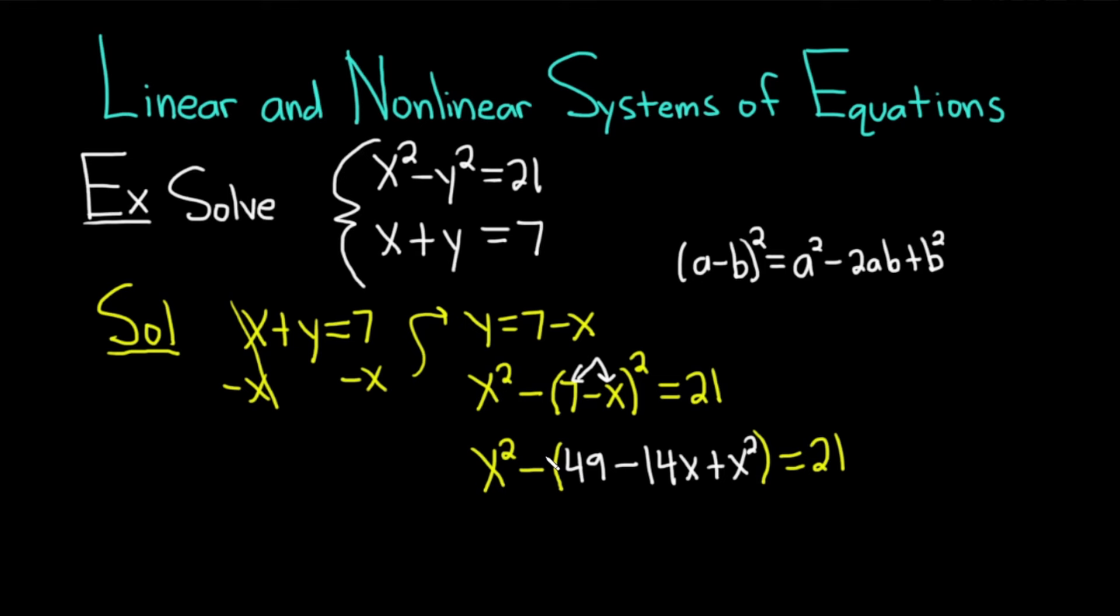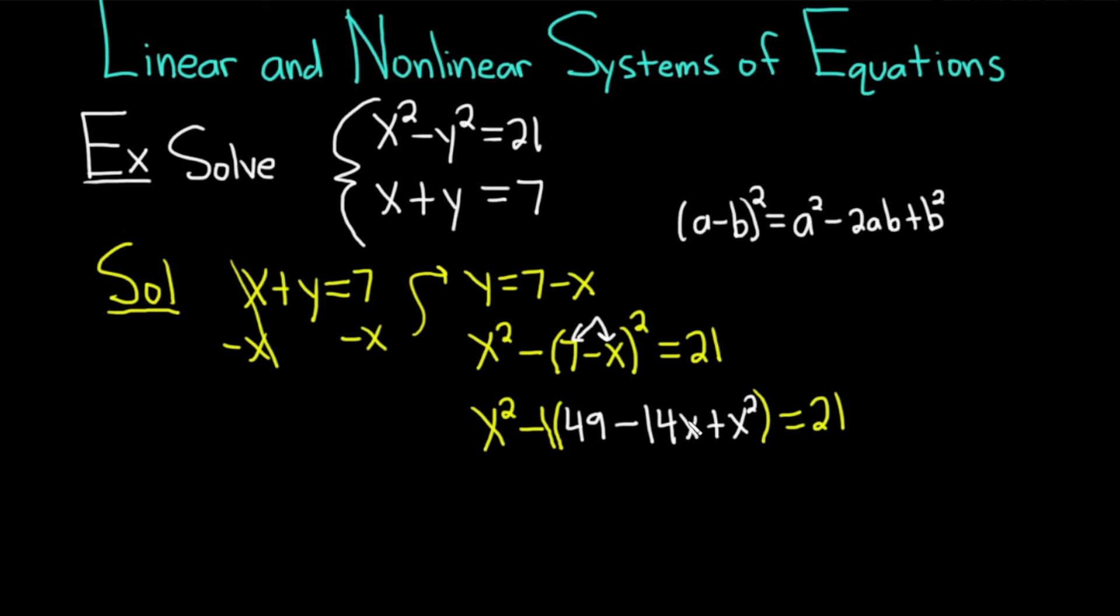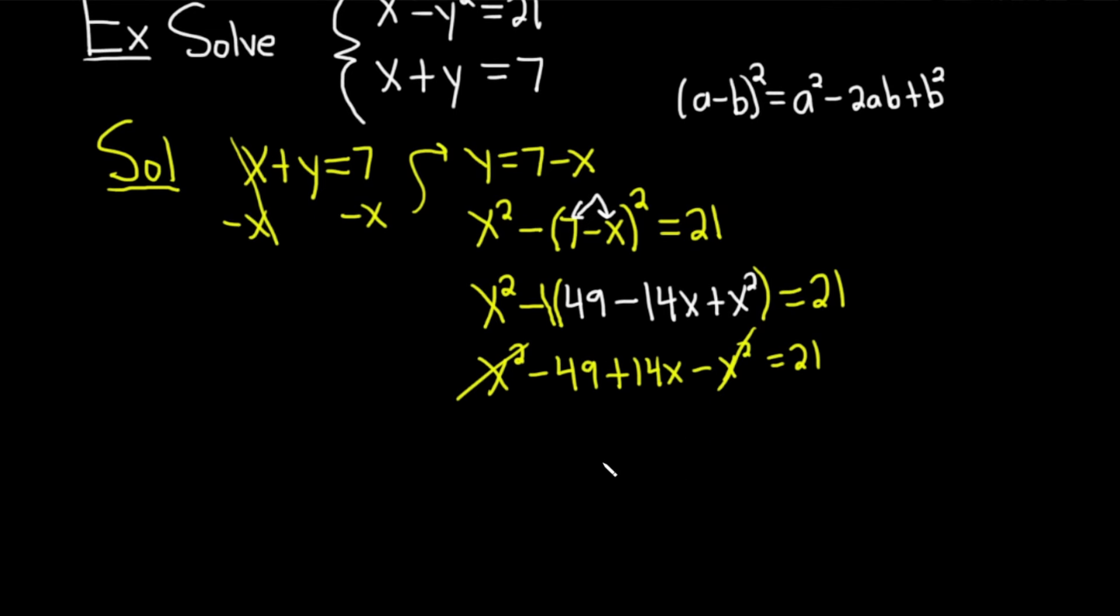Let's go ahead and distribute here. There really is an invisible minus 1 here. So basically, we're going to distribute that through and change all the signs. So we have x squared. Negative 1 times 49 is negative 49. Negative 1 times negative 14x is positive 14x. And then negative 1 times x squared is negative x squared. This is equal to 21. Good. Oh, look at this, the x squareds go away. That's really good. A lot of times they don't go away and it creates more answers. That worked out very nicely.